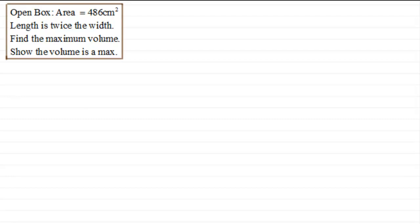Hi. Now, what I want to show you in this video is how we can use stationary points in practical applications. What I've got here to demonstrate this is a fairly typical question that you're likely to see. We've got an open box and we're told that its surface area is 486 centimetre squares. We're given that the length is twice the width. And what we've got to do is find the maximum volume and show that the volume is a maximum.